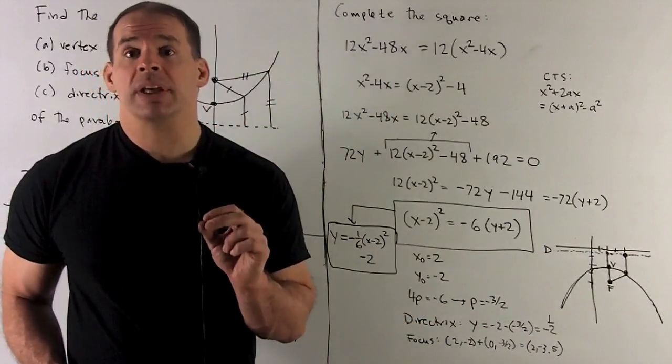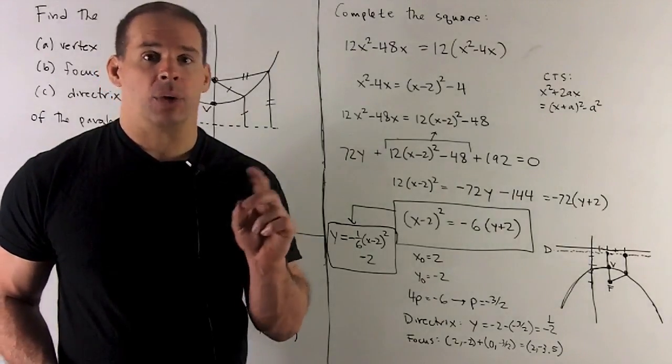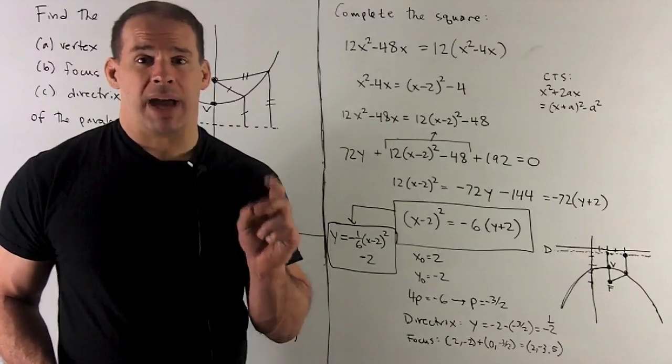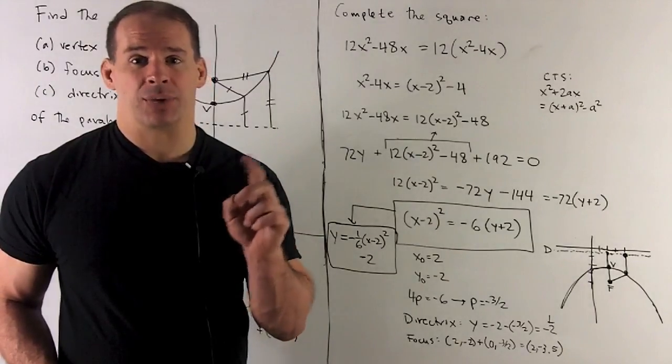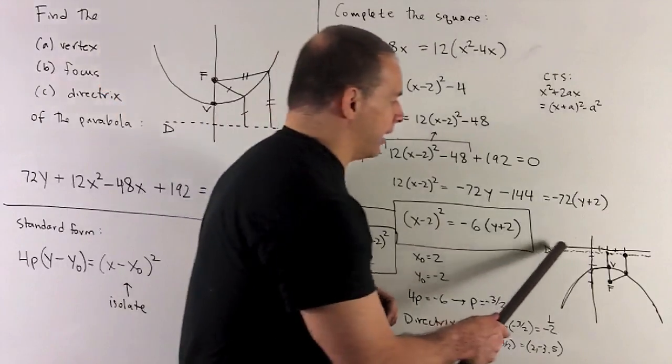Our directrix is given by Y = Y₀ - P, so we're going to take Y₀, which is -2. Minus P is minus -3/2, so we have a directrix at Y = -1/2, and I put that in there.